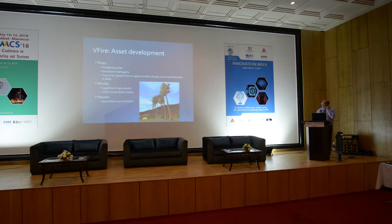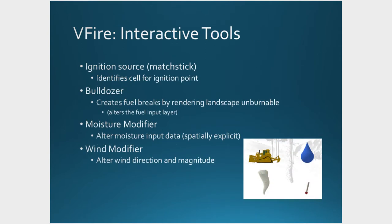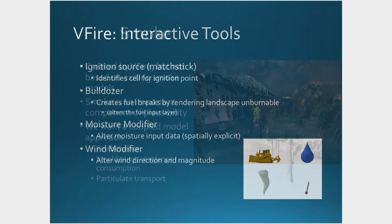We've been able to do a lot of forest asset development and modeling of trees inside our simulation. We have a couple of major types of trees that fit around the area where I live, some shrubs, sagebrush, and a few other Great Basin items. We have houses that we can identify from satellite data. We've added a lot of interactive tools because if you're going to do a forest fire simulation, you've got to be able to pause it and change things. We can start fires once we pause it, bring a bulldozer in to bulldoze a spot to clear fuel and make a fire break, or bring a helicopter to drop water onto the fire.